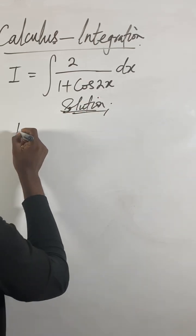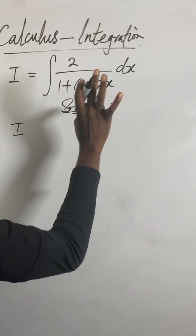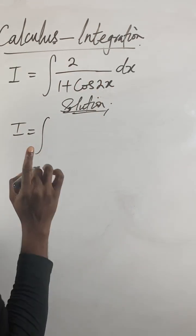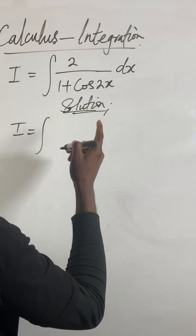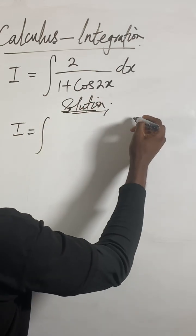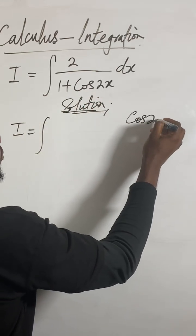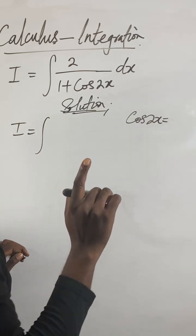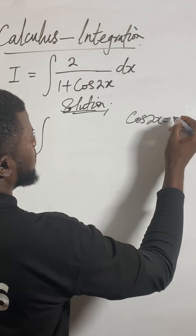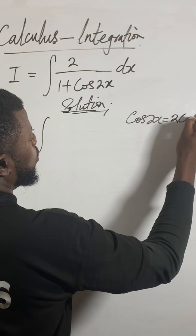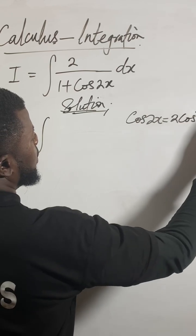First of all, I haven't integrated yet. I'll just show you one of the formulas we'll use. But before then, we can run through the formula quickly. Remember that cos2x, the same thing for trigonometry, cos2x is the same as 2cos²x - 1. Don't forget that one.